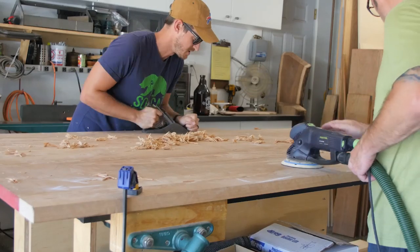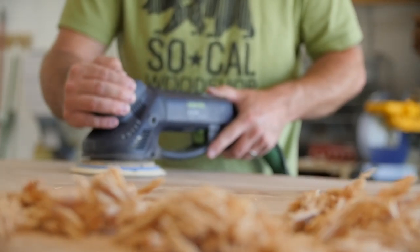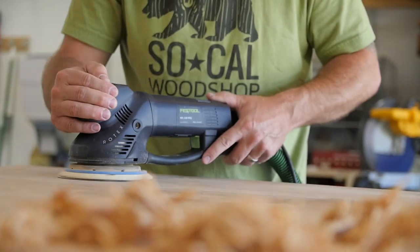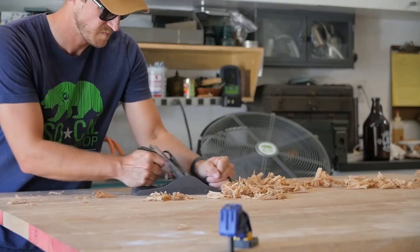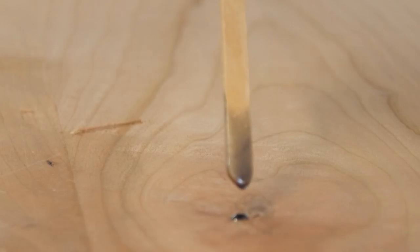From there, Pete and I used a combination of hand planes and a Rotex sander to make sure that the tabletop was nice and flat. Once the tabletop was in good shape, we went back with some black tinted epoxy and filled in any little knots or any imperfections in the top.